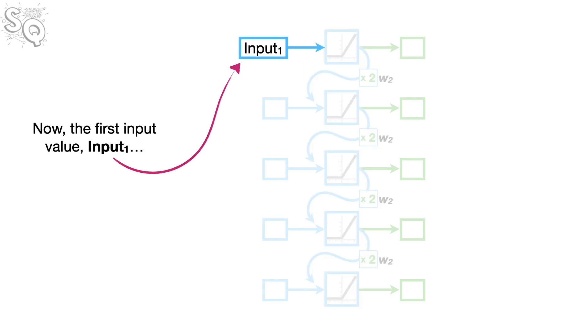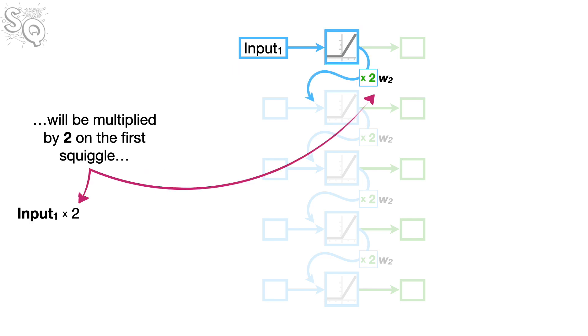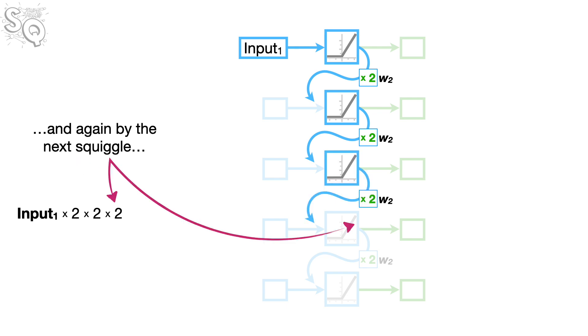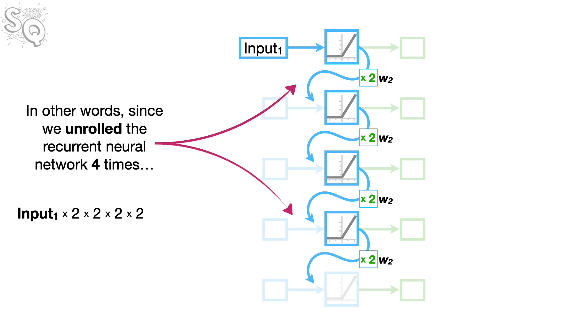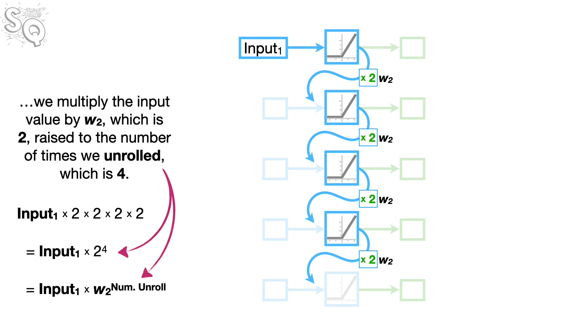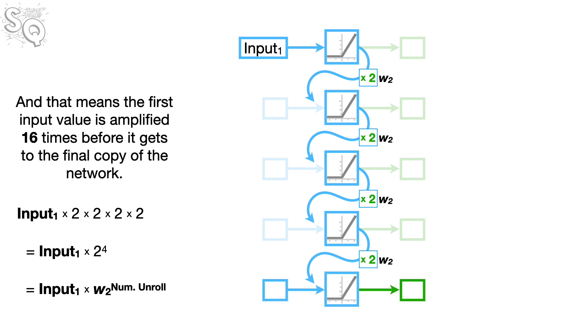Now, the first input value, input sub 1, will be multiplied by 2 on the first squiggle, and then multiplied by 2 on the next squiggle, and again on the next squiggle, and again on the last squiggle. In other words, since we unrolled the recurrent neural network four times, we multiply the input value by W sub 2, which is 2, raised to the number of times we unrolled, which is 4. And that means the first input value is amplified 16 times before it gets to the final copy of the network.